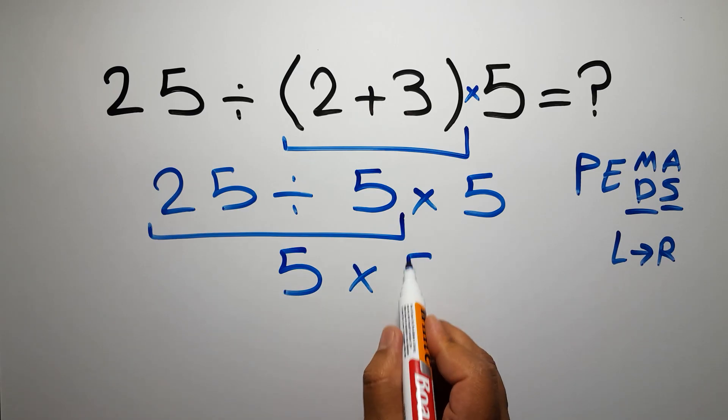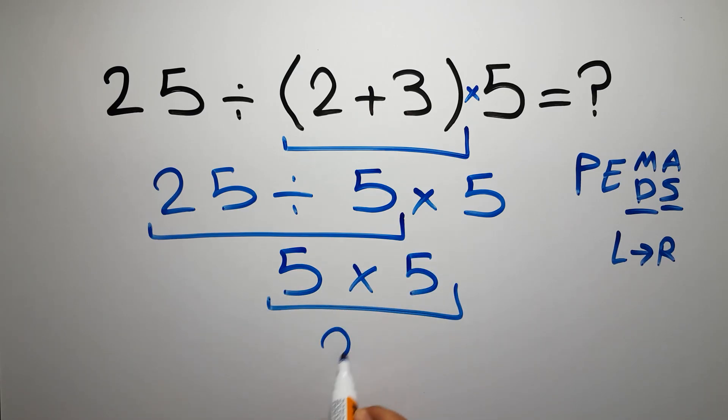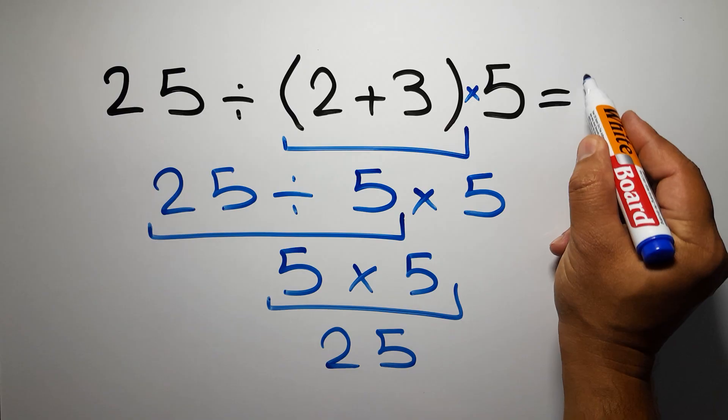And 5 times 5 is just 25. And this is our final answer to this problem. The correct answer is 25.